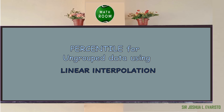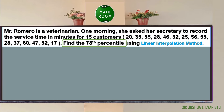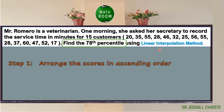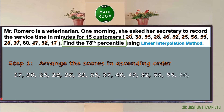Now let us discuss how to solve the percentile for ungrouped data using linear interpolation. Mr. Romero is a veterinarian. One morning, she asked her secretary to record the service time in minutes for 15 customers: 20, 35, 55, 28, 46, 32, 25, 56, 55, 28, 37, 60, 47, 52, 55, and 17. Find P sub 78 using the linear interpolation method.